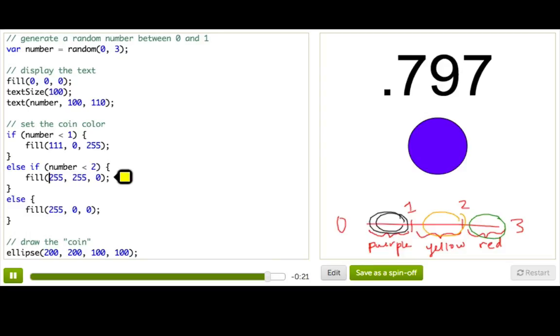So it's going to fall in that range. And here's a case where we couldn't just say if number is less than 2, and it would be if number is less than 3. Because if number is less than 1, then it's definitely less than 2. And it's also going to be less than 3. So our coin is always going to end up red. And that's why in this case, it's really helpful to have else if.